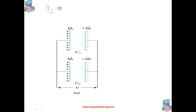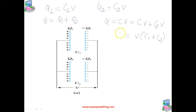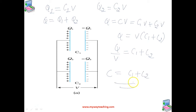The charge on capacitor 1 is Q1 = C1·V and on capacitor 2 is Q2 = C2·V. The equivalent capacitor carries total charge Q = Q1 + Q2. So we can write Q = C1·V + C2·V. Taking V common, Q/V = C1 + C2. Therefore the equivalent capacitance C = C1 + C2 when capacitors are connected in parallel.